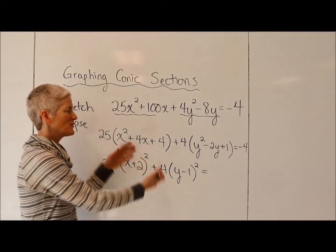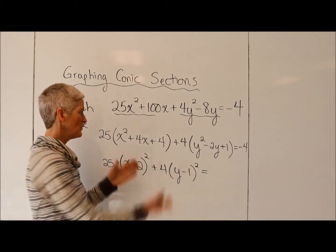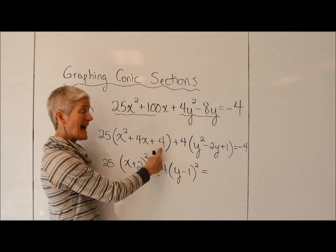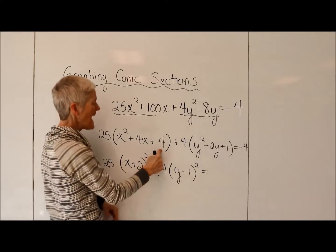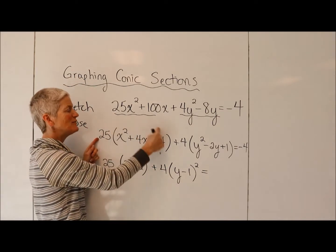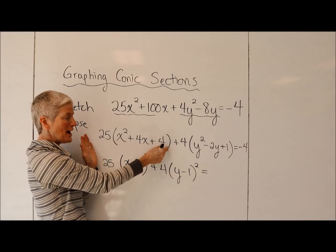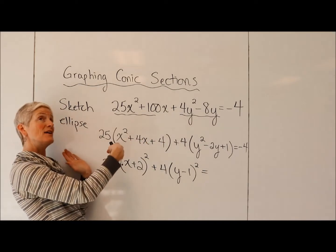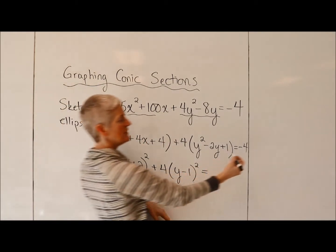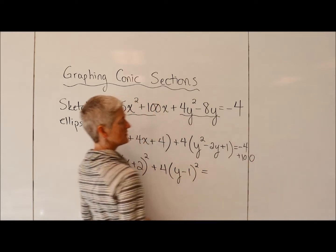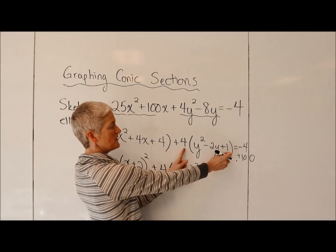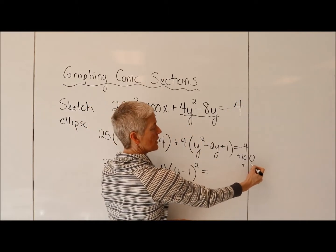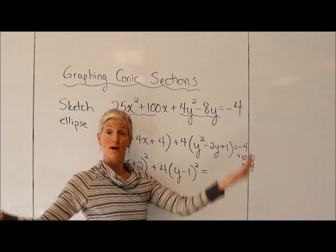But I can't just willy-nilly add things to that side of the equation without balancing it out. So here, I added a 4, but hold on. I didn't really add a 4. I'm really adding 25 times 4. So by writing that there, I really added 100 to the side. So I can either subtract 100 from the side or add 100 to the other side. I'm going to add 100 to the other side. In this piece, I added 1 times 4. So let's add 4 to the other side. Again, I'm keeping my equation balanced.